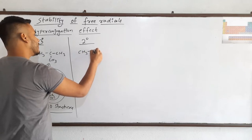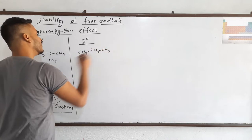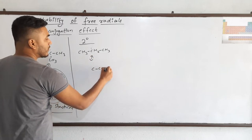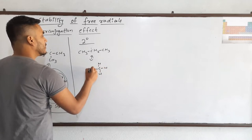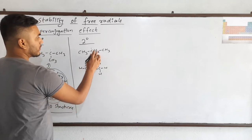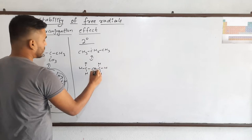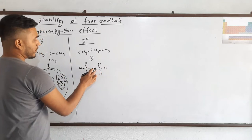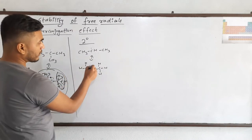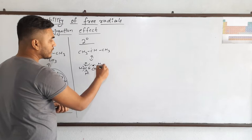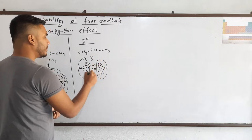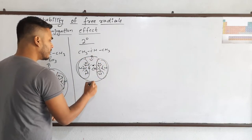Similarly, for two degree free radicals, the expanded structure shows the electron can come onto adjacent bonds. When we count: 3 plus 3 plus 1, that gives a total of 7 hyperconjugative structures for two degree free radicals.